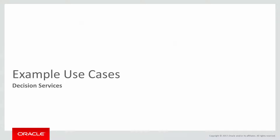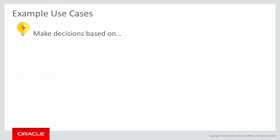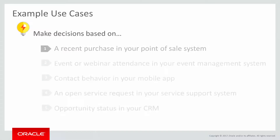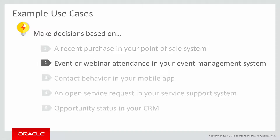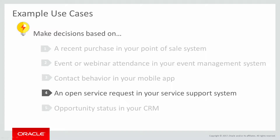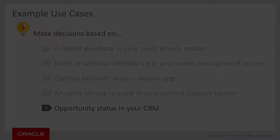Here are some examples that allow marketers to personalize the customer experience by making decisions on things like a recent purchase in your point of sale system, an event or webinar attendance in your event management system, contact behavior in your mobile app, an open service request in your service support system, or opportunity status in your CRM.